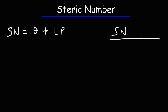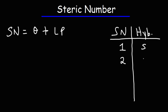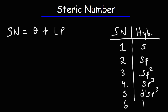Here are some general rules in a table relating steric number to hybridization. If the steric number is 1, you're dealing with a pure s orbital. If it's 2, you have sp hybridization. If it's 3, the hybridization is sp2. If it's 4, you're dealing with sp3. For 5 it's dsp3, and for 6 it's d2sp3. Notice that the exponents add up to the steric number.